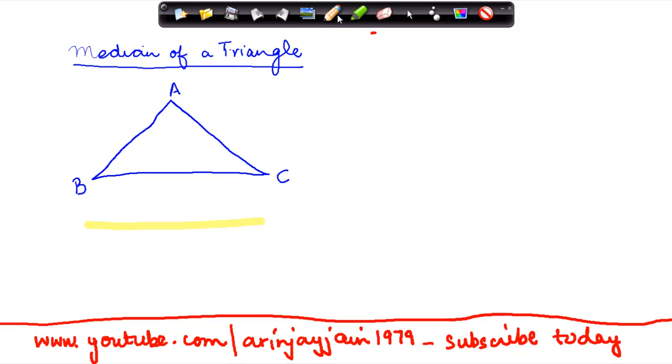Now I need to find out what is the midpoint, the center point of the line BC. Let's say there is a point here, D, which is dividing the line BC into two equal parts. So BD is equal to DC.